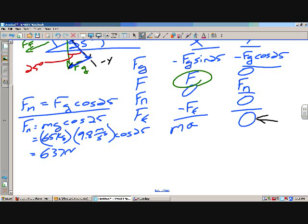Oh, good lord, people. Well, 65 times 9.8 times cosine 25. Okay, wait a minute. I got 588.